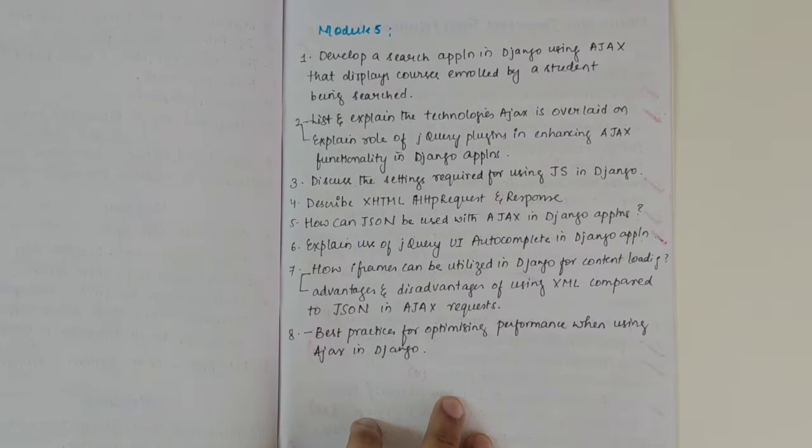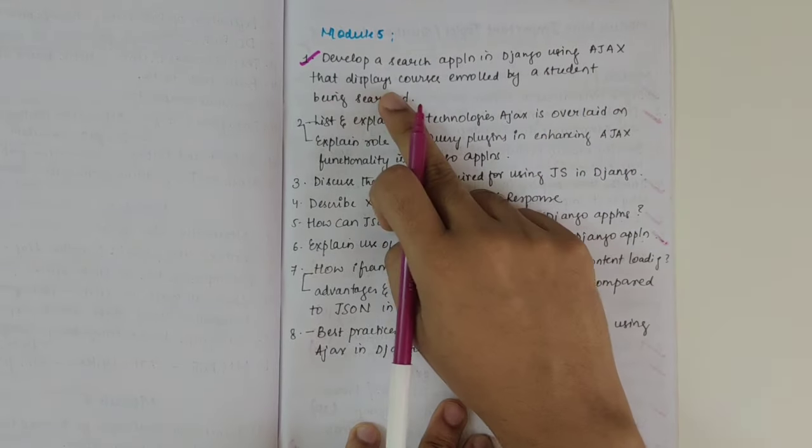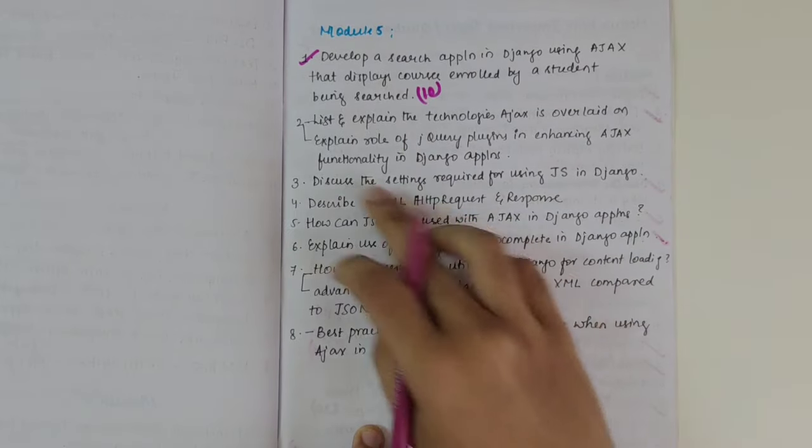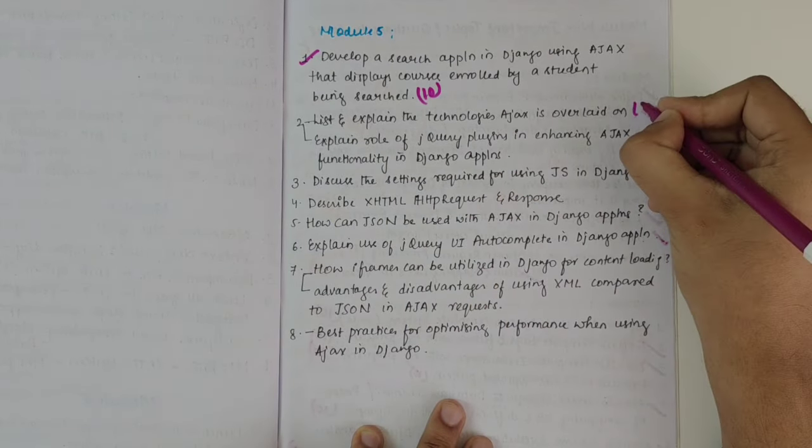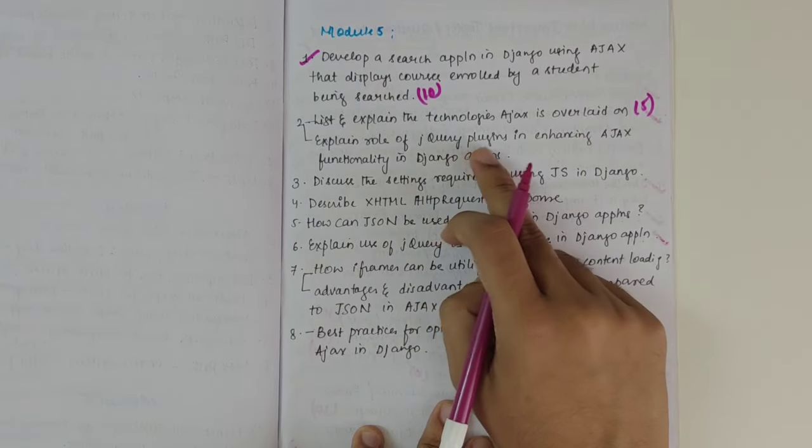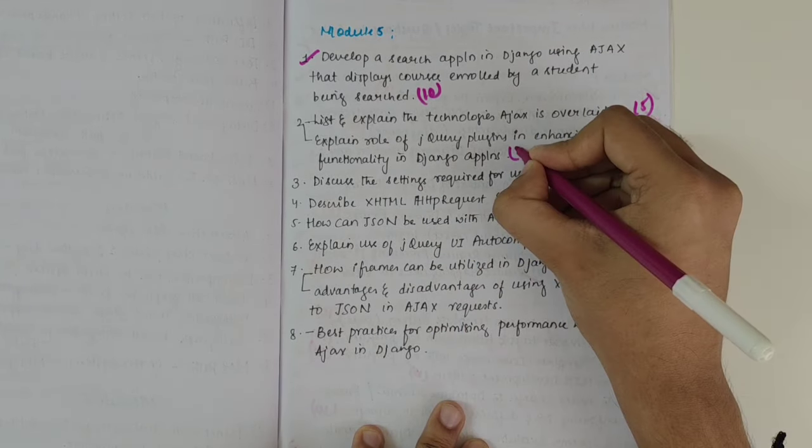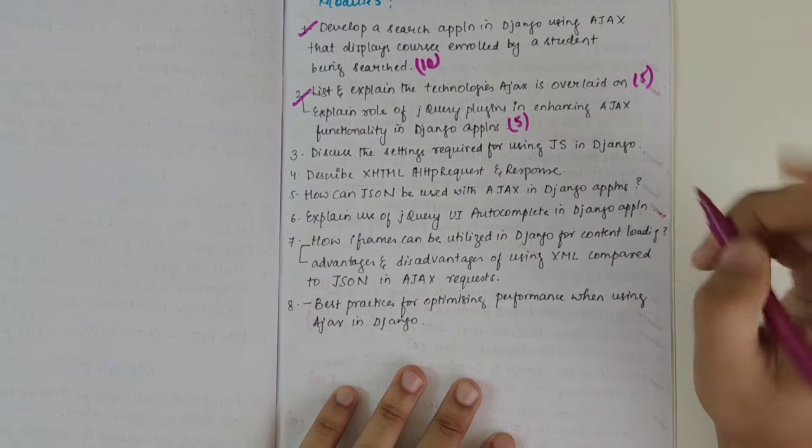We have standard questions again, search application in Django using Ajax that displays courses enrolled by student being searched, 10 marks, must. Then we have explain the technologies Ajax is overlaid on. This could be five or six marks. Then role of jQuery plugins in enhancing functionality in Django. This could be four marks or six marks.